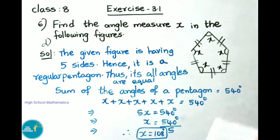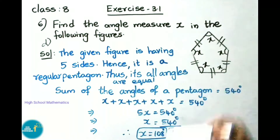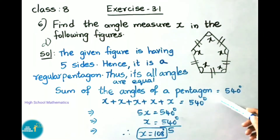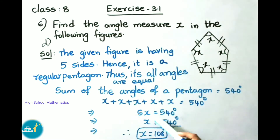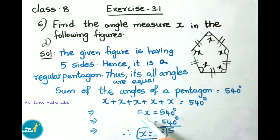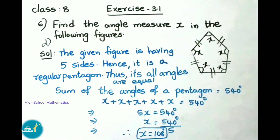See now sixth question D. The given figure has five sides, hence it is a regular pentagon, so all its angles are equal. The sum of the angles of a pentagon is 540 degrees. Adding all five equal angles: 5x = 540, so x = 540 ÷ 5 = 108 degrees. Therefore each angle of this regular pentagon is 108 degrees.